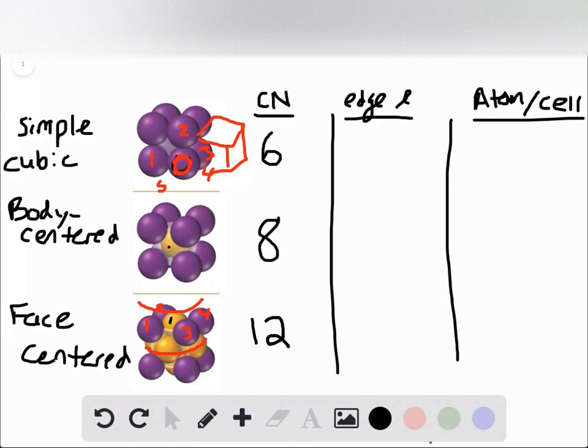And what that means is, since we have these atoms touching each other, if we put a corner inside one of these cells and then a corner in another neighboring cell and draw a line between them, the distance of that line is going to be two times the radius of those atoms. That one's a lot more straightforward.